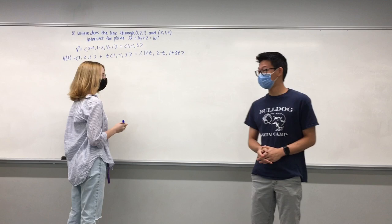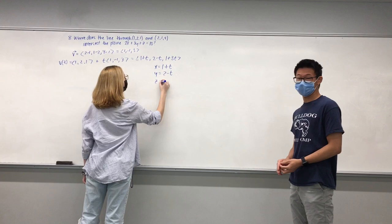And to compare from vector form to parametric form, we choose x is equal to 1 plus t, y is equal to 2 minus t, and z is equal to 1 plus 3t.